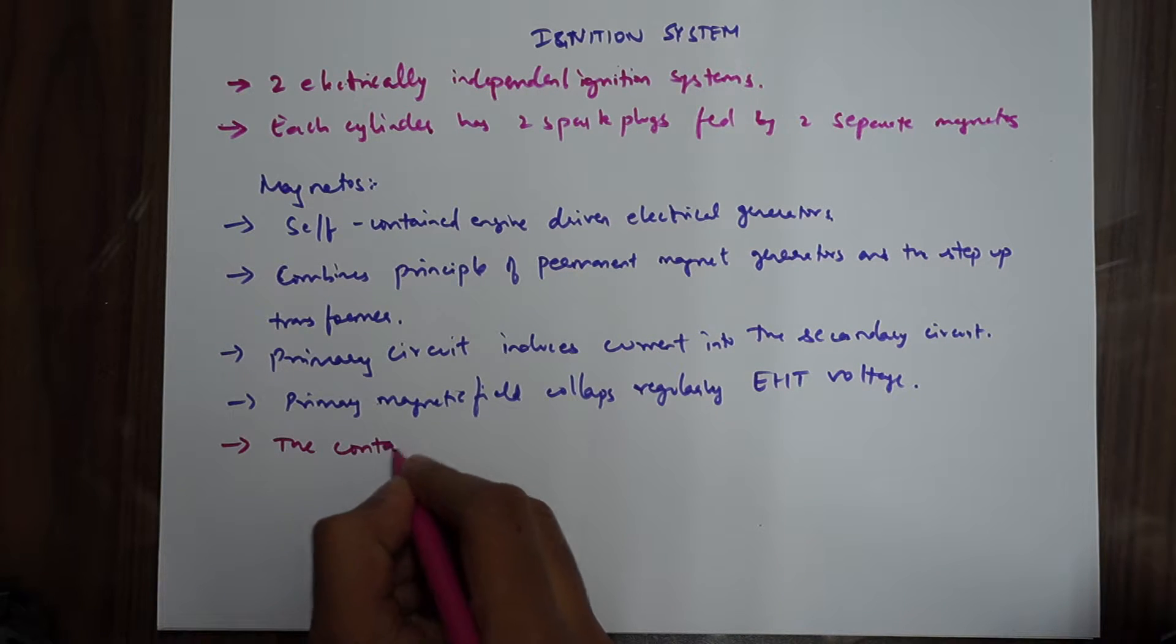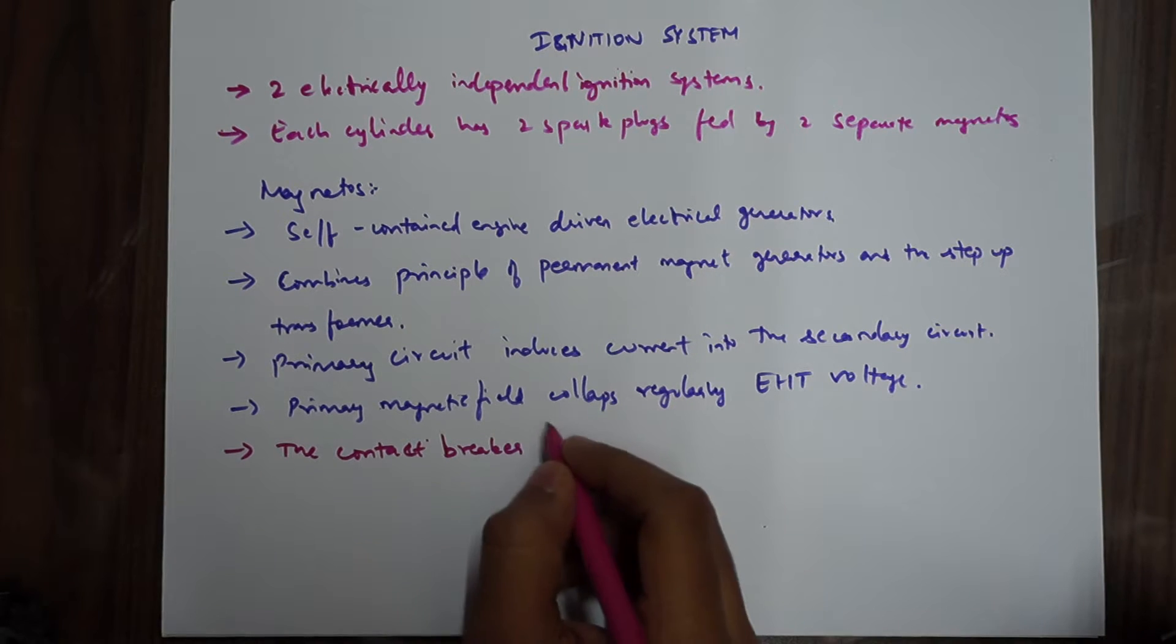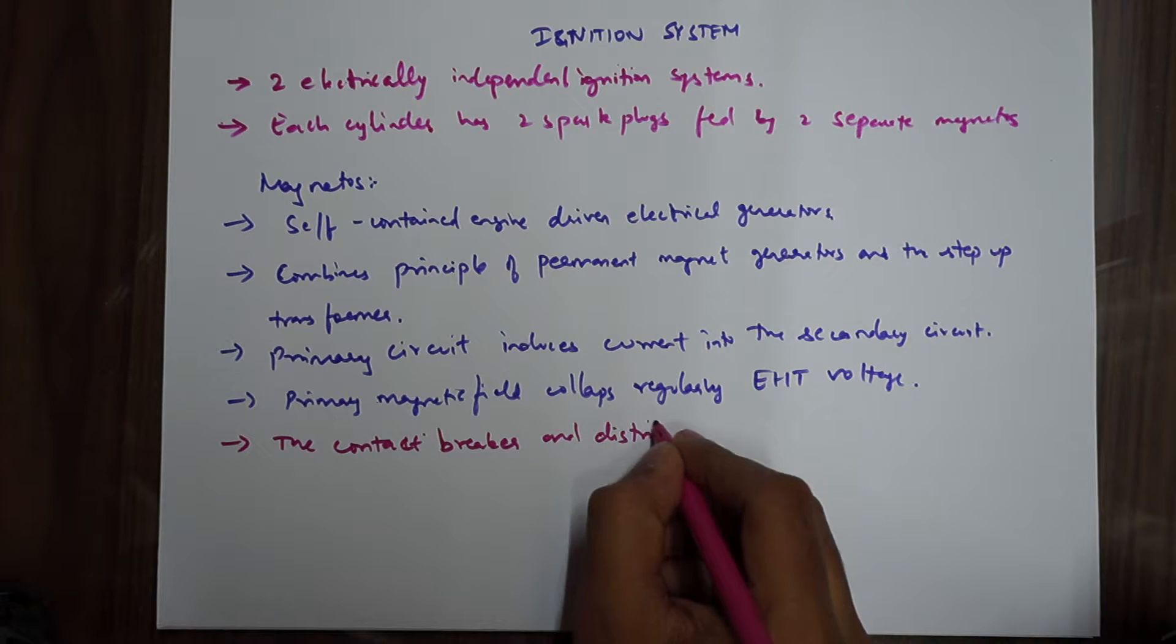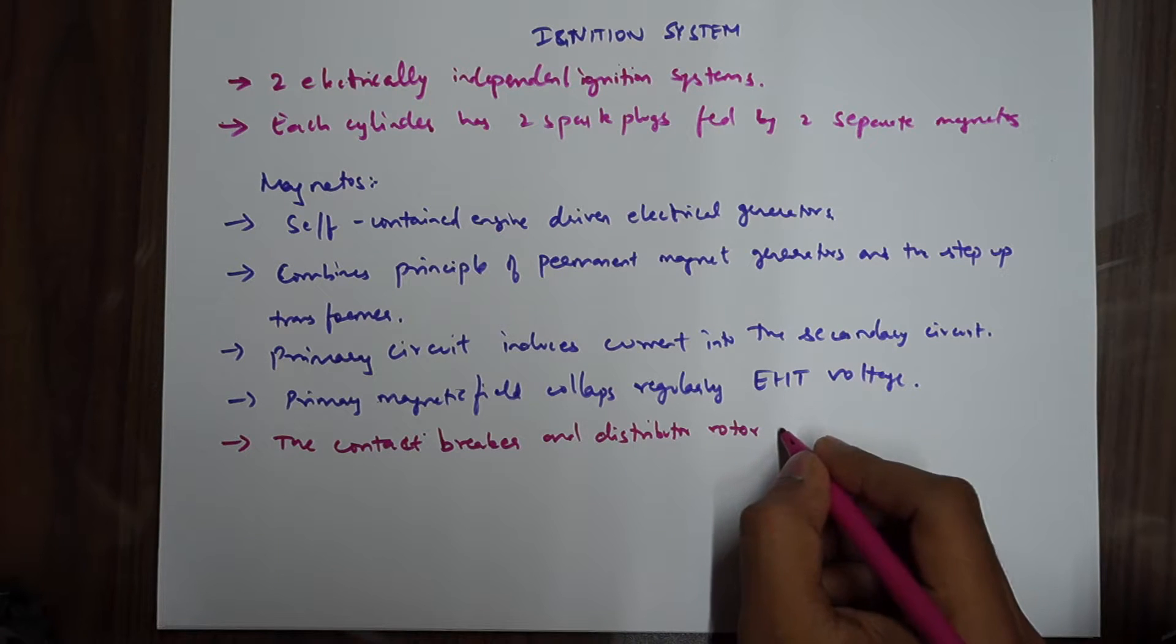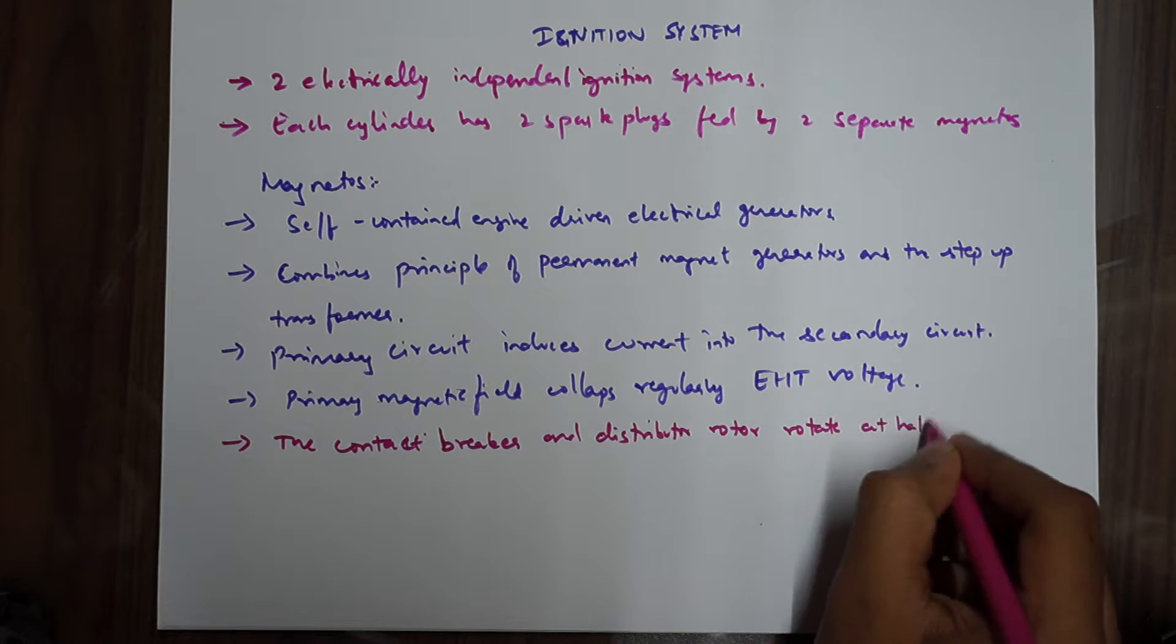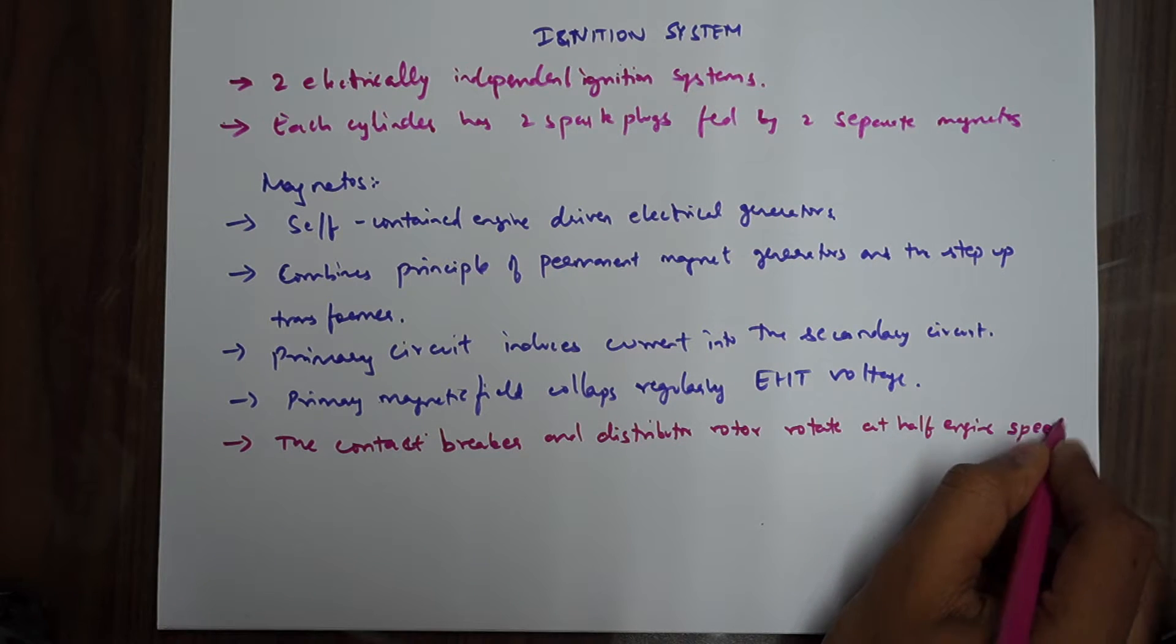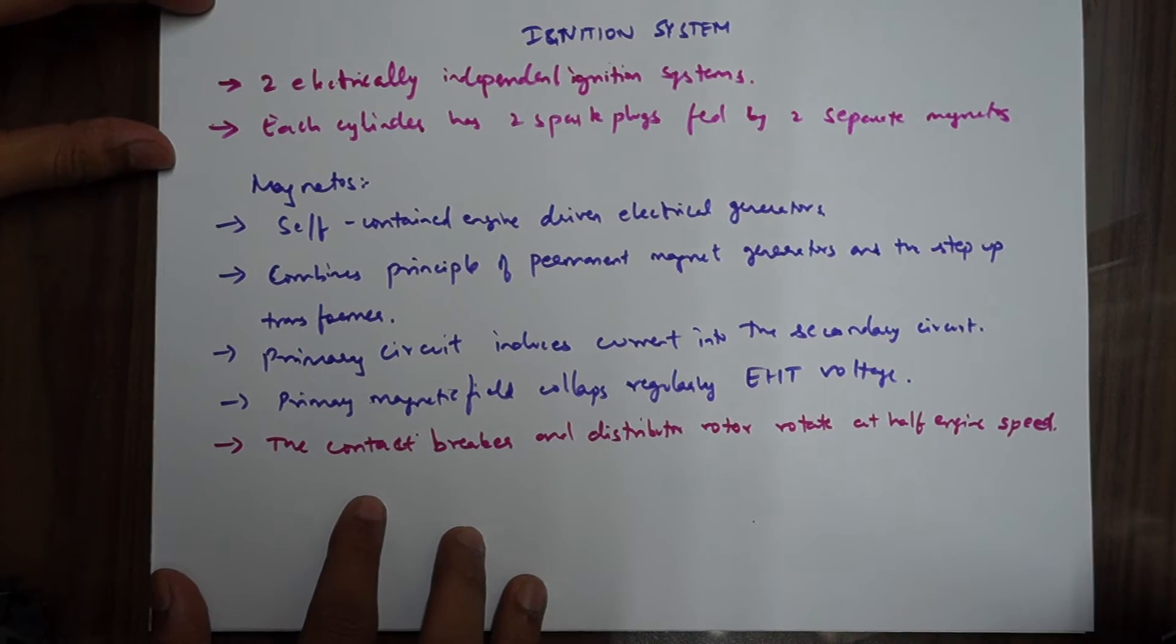The most important point here is the contact breaker and distributor rotor rotate at half engine speed. This is very important.